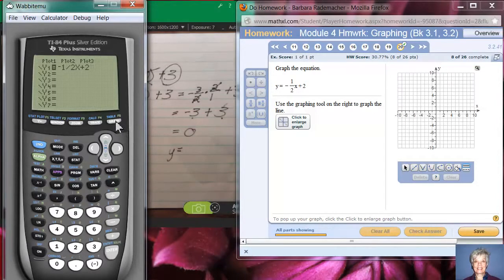Now, I can graph it just to see what it looks like, and I can find two convenient points just by doing the following. Push the second key, and then push the graph key. Don't push them together, but say second, let up, and then graph.